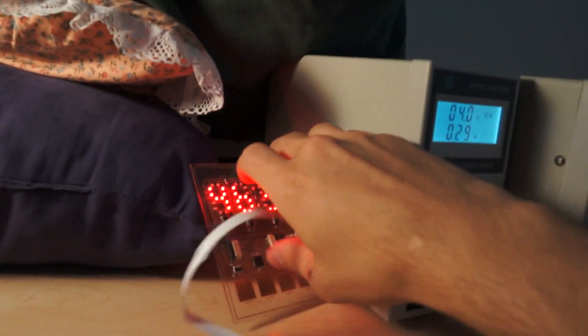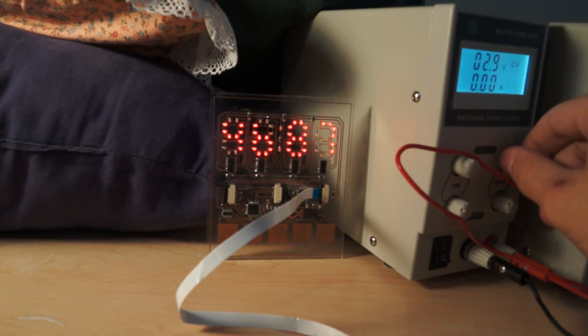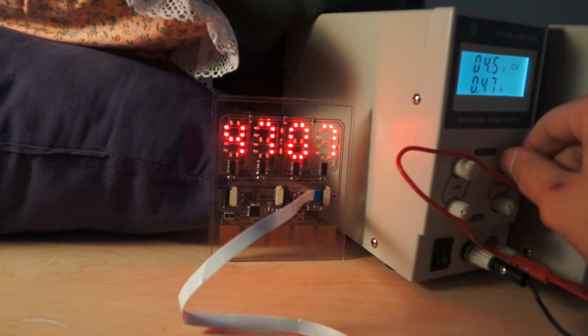And right now you can control the brightness by adjusting the voltage of the power supply here. So if I turn it down it gets really dim, I can turn it up, it gets really bright.